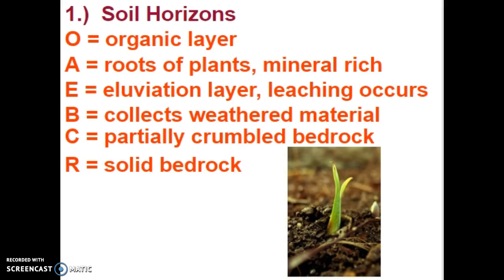The next two layers — the E and the B layer — are often called the subsoil. You need subsoil in order to build topsoil and grow crops. The E layer stands for eluviation; this is where leaching occurs in the soil. You can think of it as an elevator layer, because the E layer brings up all of the minerals and leaches them from the very bottom parts of the bedrock up to the topsoil layers.